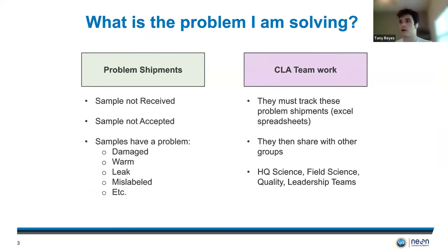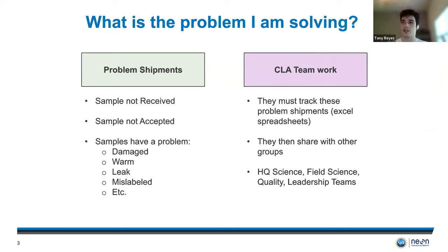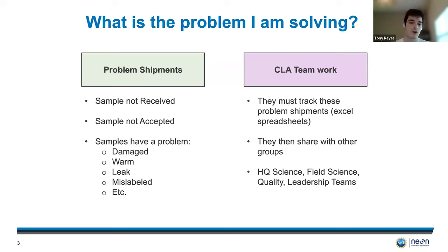So what is the actual problem that I am solving? The thing with the samples is that all of the shipments that contain the samples can have some problems. A couple of the samples are not received; some of them are just not accepted, and even if they are accepted, the samples can still have problems. Here are some examples: damaged, warm, leak, or mislabel — there are many more.